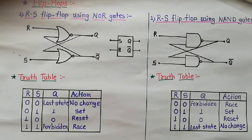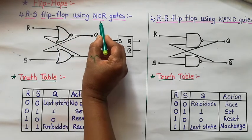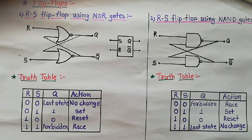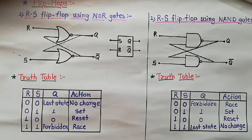In this lecture we study the types of flip-flops. The first type of flip-flop is the RS flip-flop. The RS flip-flop is constructed by using NOR gates and by using NAND gates. First we study the RS flip-flop by using NOR gates.